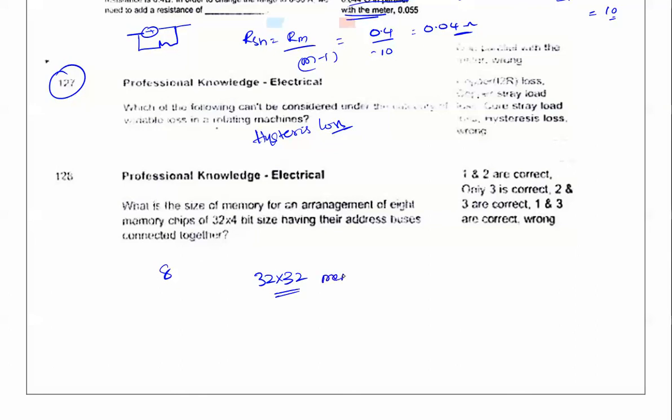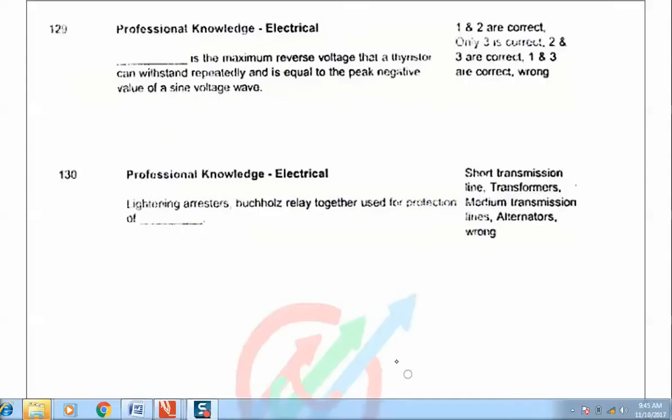Next question: What is the maximum reverse voltage that a thyristor can withstand repeatedly and is equal to peak negative value of its sine wave? If you go for the characteristics of peak reverse voltage, it will be like this, spikes will come here. What is this voltage? It's nothing but peak reverse working voltage.